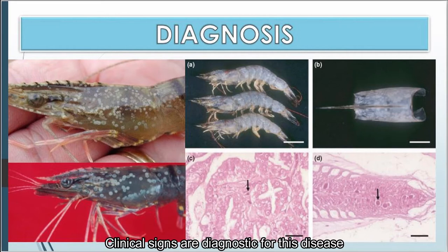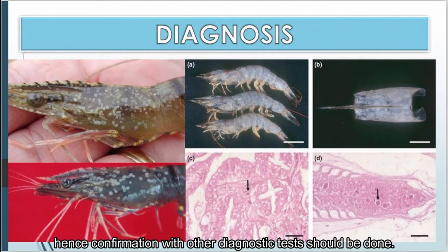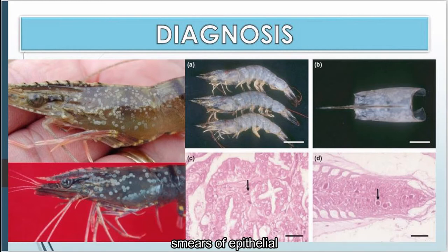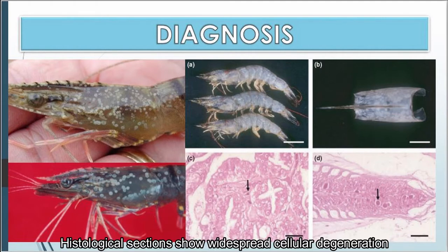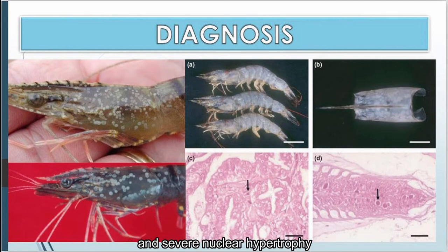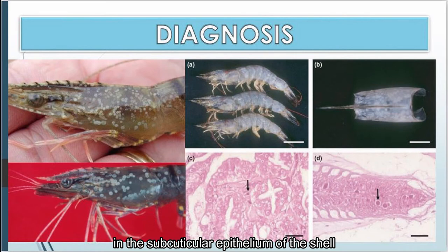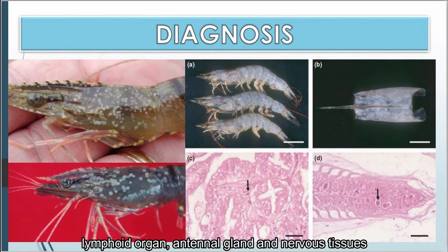Clinical signs are diagnostic of white spot disease; however, recent reports indicate that some bacteria may induce similar signs, so confirmation with other diagnostic tests should be done. Demonstration of hypertrophied nuclei in stained squashes and smears of epithelial and connective tissues of the gills or stomach of affected shrimp is used. Histological sections show widespread cellular degeneration, severe nuclear hypertrophy, chromatin margination, and eosinophilic intranuclear inclusions in the subcuticular epithelium of the shell, gills, stomach, connective tissues, hematopoietic tissues, and lymphoid organ.